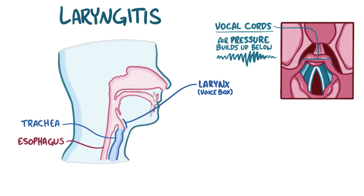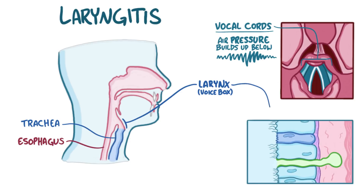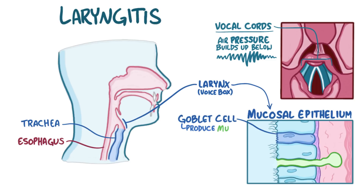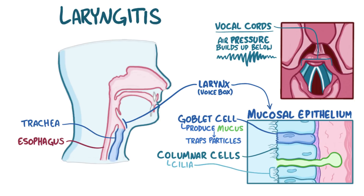Like the rest of the respiratory tract, the walls of the larynx are made up of mucosal epithelium. The mucosal epithelium contains goblet cells, which produce mucus to trap small foreign particles, as well as columnar cells, which have cilia — tiny little hair-like projections that move the mucus up the respiratory tract so that it can be coughed out.